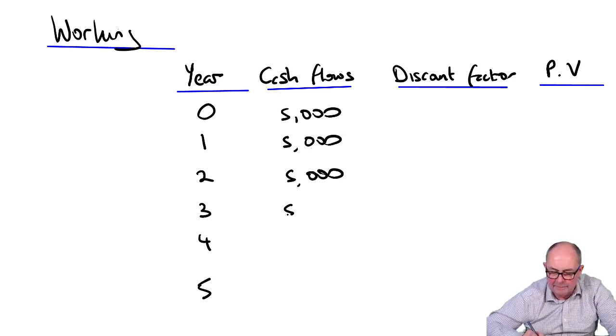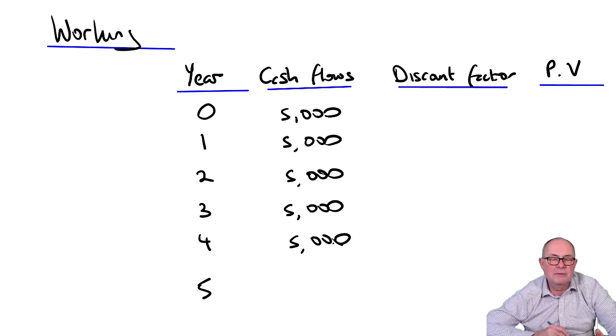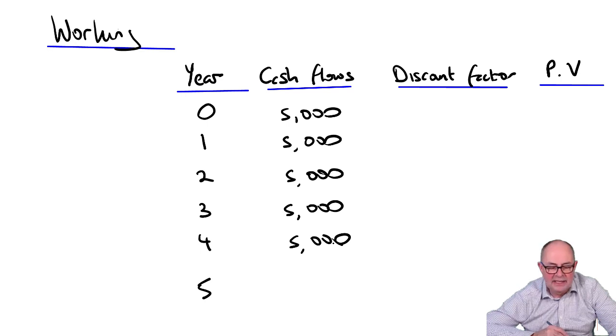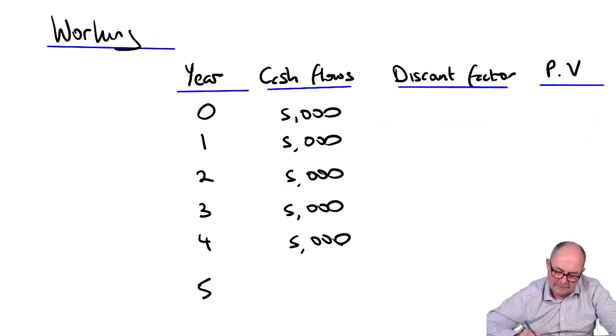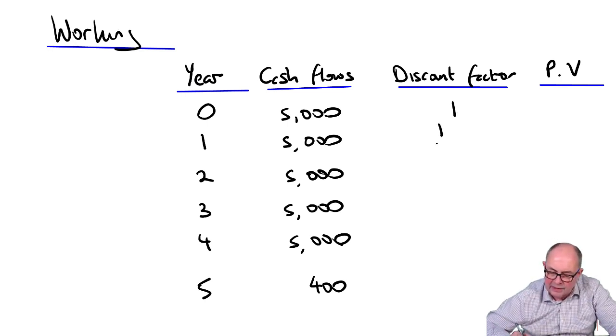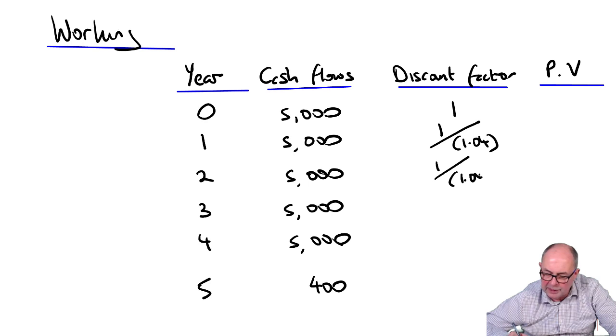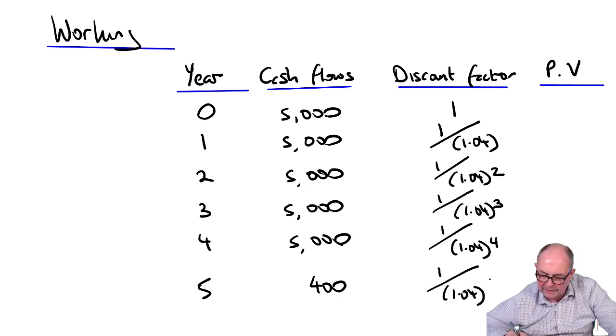And that will repeat itself, another four times. That's the money from the customer. Remember, the customer pays in advance. At the end of the fifth year, the asset is then sold for scrap. And the scrap value was 400. I'll put the discount factors in place. So, 1 over 1.04, 1 over 1.04 to the power of 2, 1 over 1.04 to the power of 3, 4 and 5.